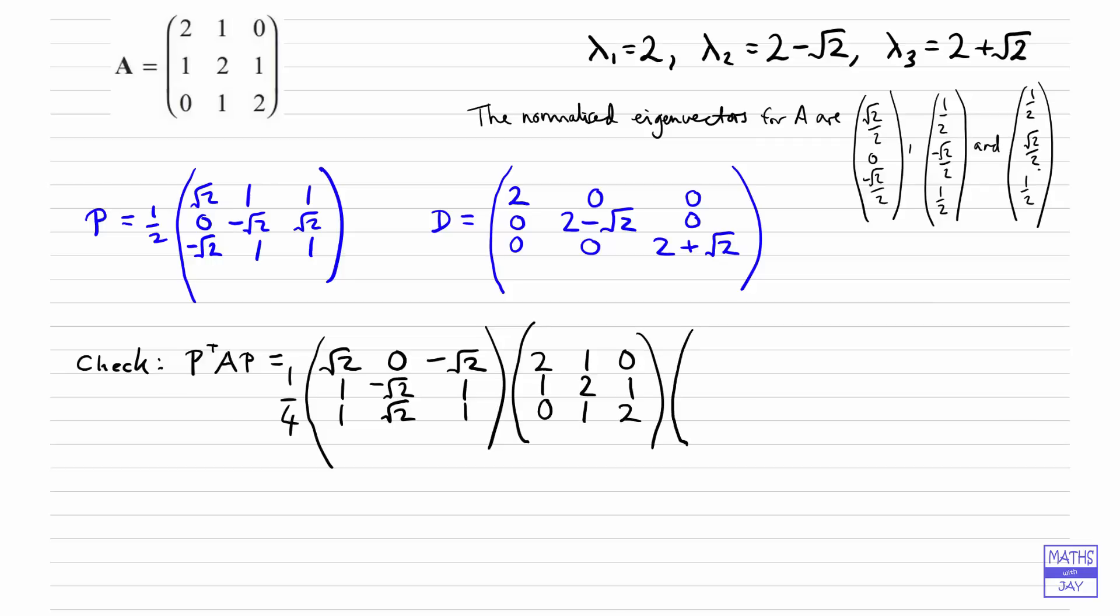And then remember we've already taken the half outside right at the front of P. So then we would just copy that down: root 2, 1, 1, 0, minus root 2, root 2, minus root 2, 1, 1. So you would multiply those together obviously in two stages.